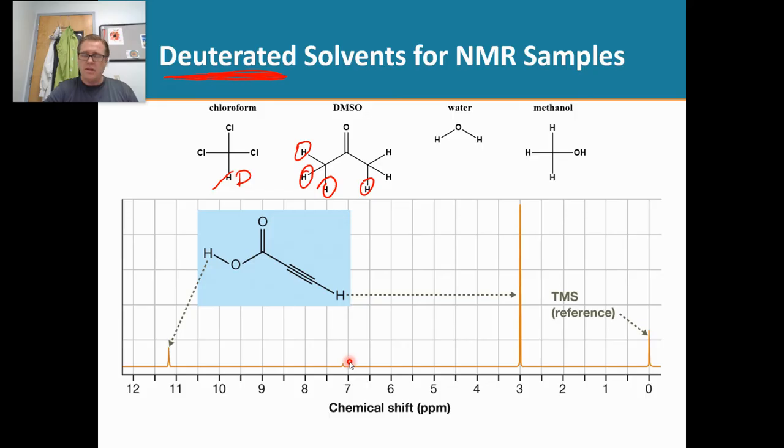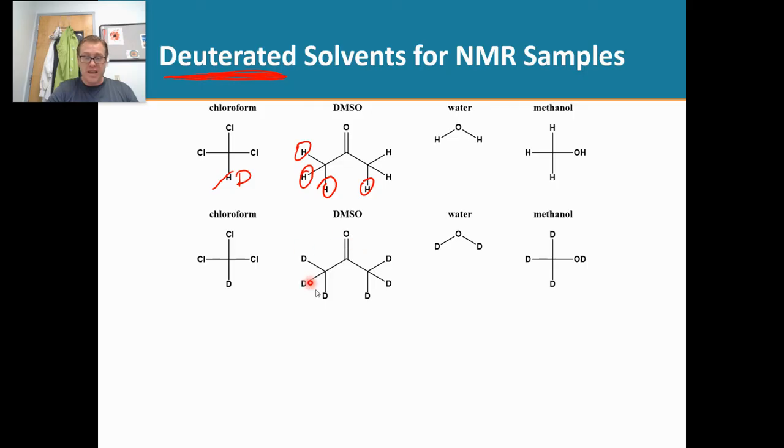That's a signal, but it's very, very tiny. What's happening here is when you buy deuterated solvents, you would expect a hundred percent of your deuterated solvent to be like this, but that's not true. It's not perfect. There's going to be a small amount of undeuterated solvent.